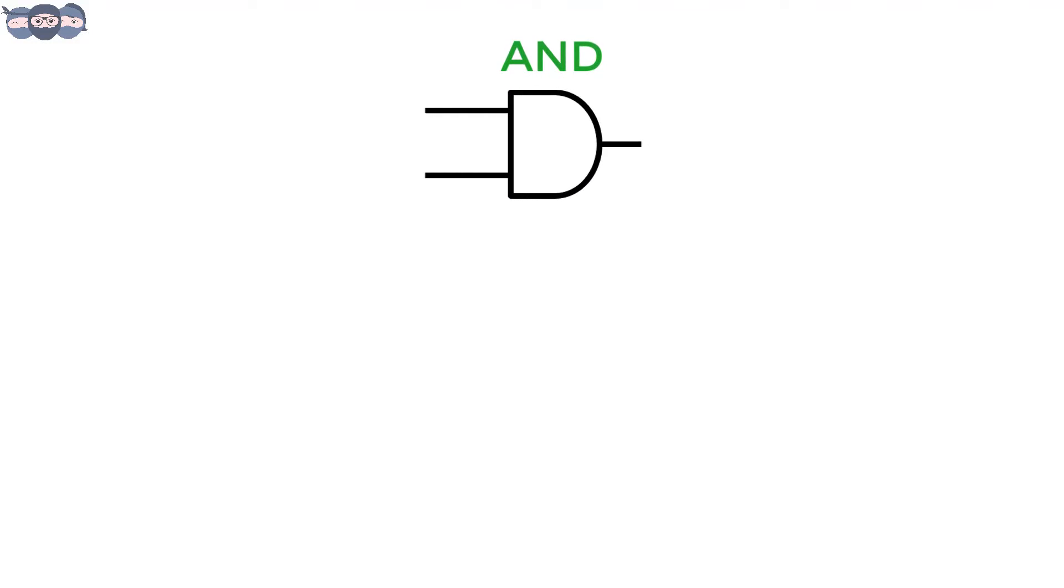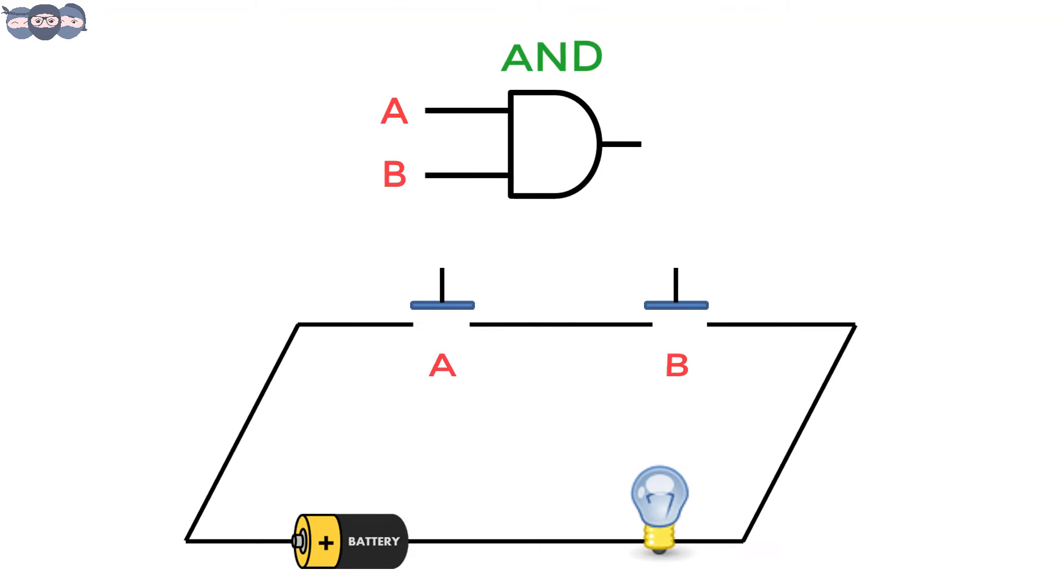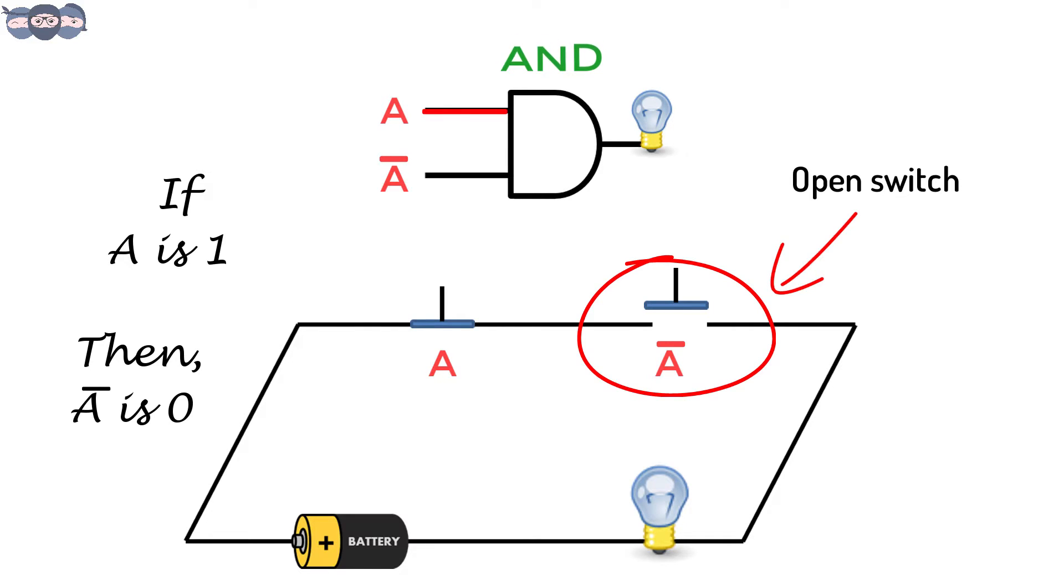Let's draw the AND gate. The inputs of AND gate can be represented by switches in series. You can refer to our previous videos on this. Let one input be variable A and the other input be A's complement, that is A bar. Suppose A is 1 or a closed switch. Its complement A bar will be 0 or an open switch.